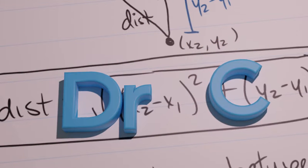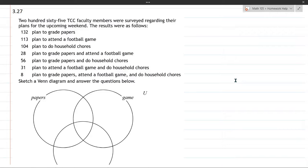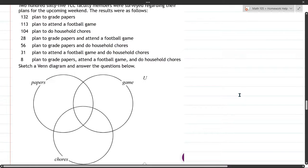This problem, we have a lot of faculty members who took a survey, and a bunch of them were planning to grade papers, watch a game, and or do chores. The way it's presented, the ones at the top only tell us how many are planning to do the individual activities, but what we're going to do is start at this right here. Eight plan to grade papers, attend a football game, and do household chores. So that is right in the center of the Venn diagram, there's going to be eight.